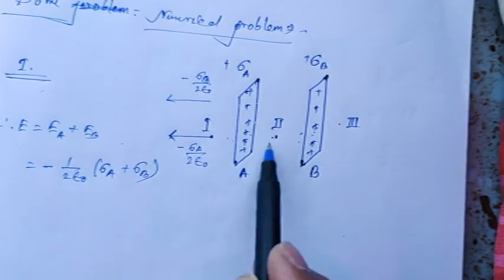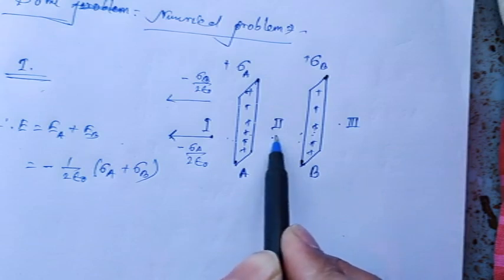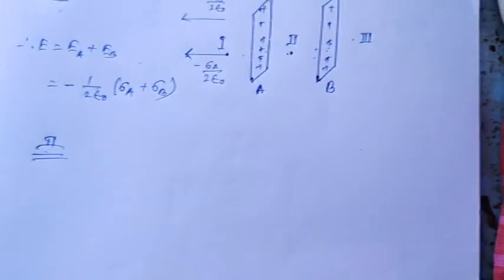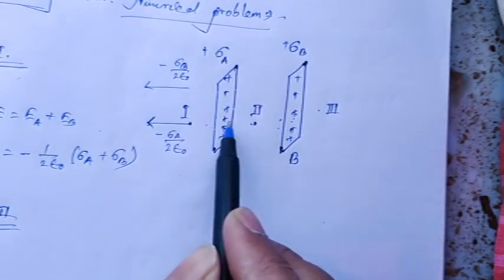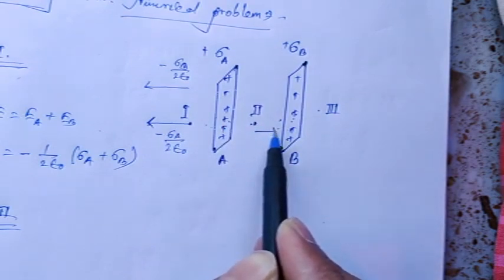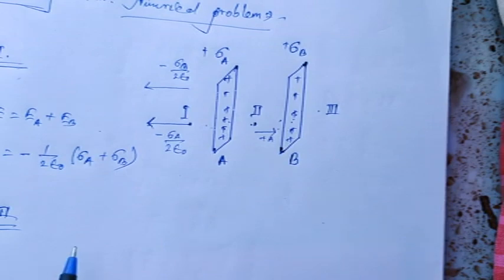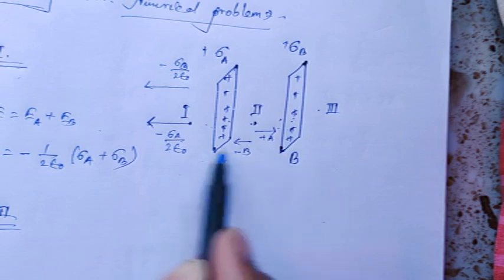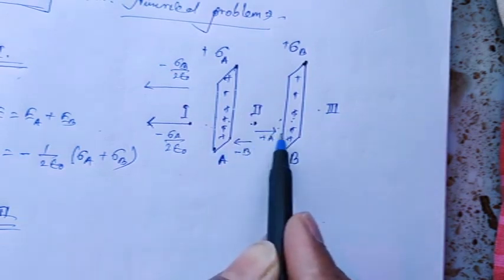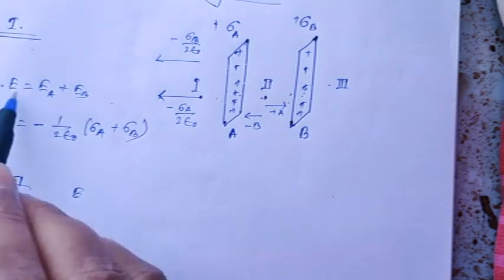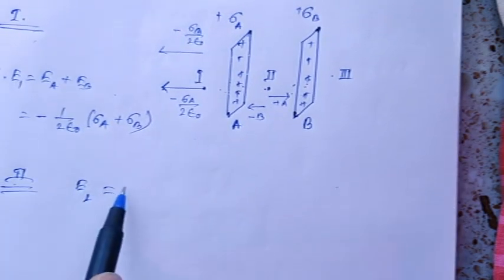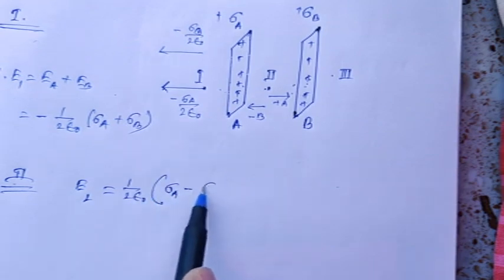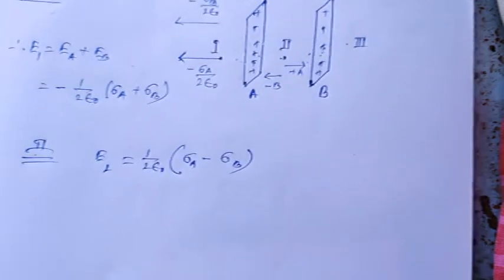In the second region (between the plates), for sigma A the field points to the right (positive), and for sigma B it points to the left (negative x-axis direction). So E2 = (1/2ε₀)(σA − σB).